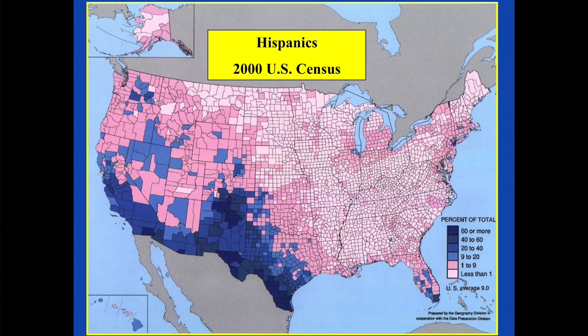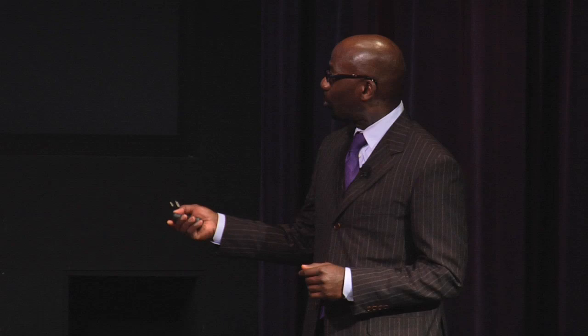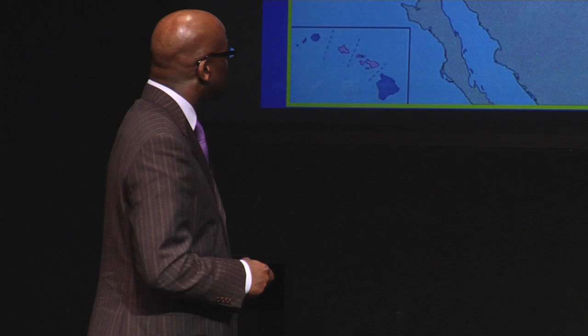Looking at where Hispanics are in the United States according to the 2000 census, one finds enormous segregation at the macro level. Hispanics in the southwestern parts of the US — mainly Mexican Americans — are quite different genetically from Hispanics in southern Florida, New York, DC, and Chicago, who have more Puerto Rican, Dominican, and Cuban ancestry. According to the census they are grouped together because they speak Spanish, but genetically they are quite different.